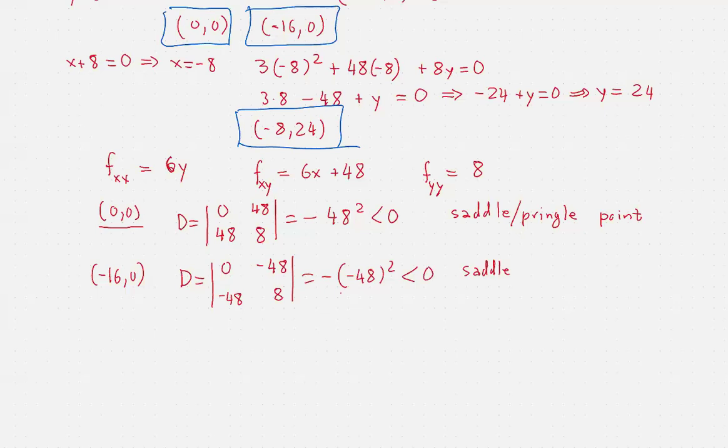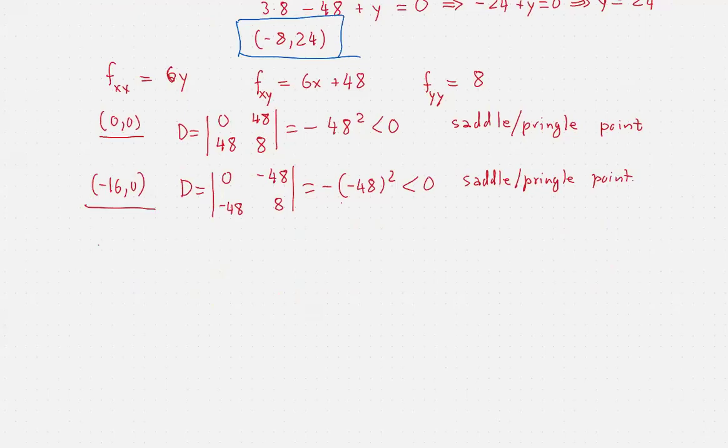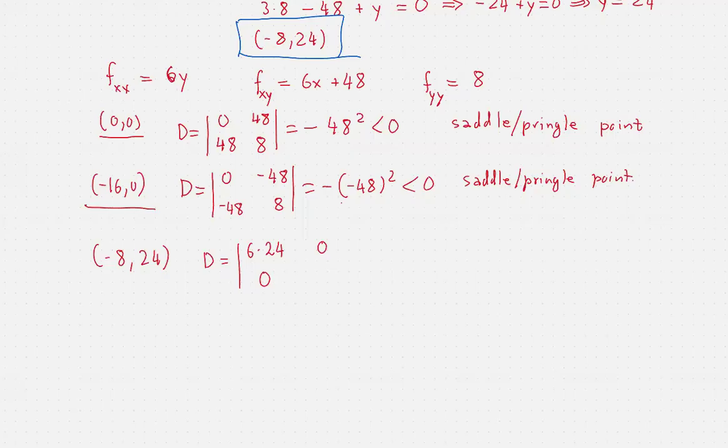Let's do the last one, which is (-8, 24). Here I will have 6 times 24. Now f_xy of (-8, 24) is 6 times (-8) is -48 plus 48, that's zero. That's very nice here. And then we get an 8.